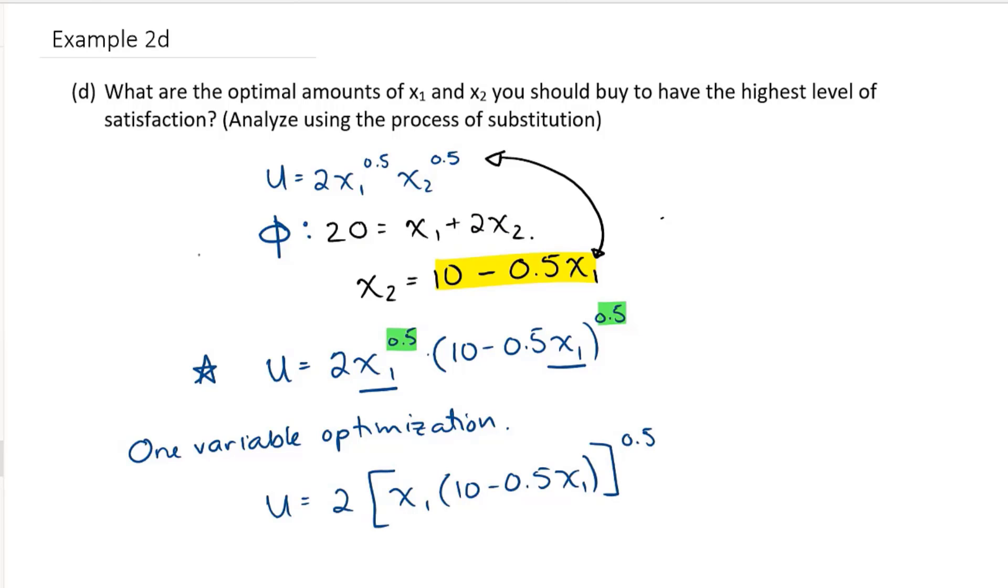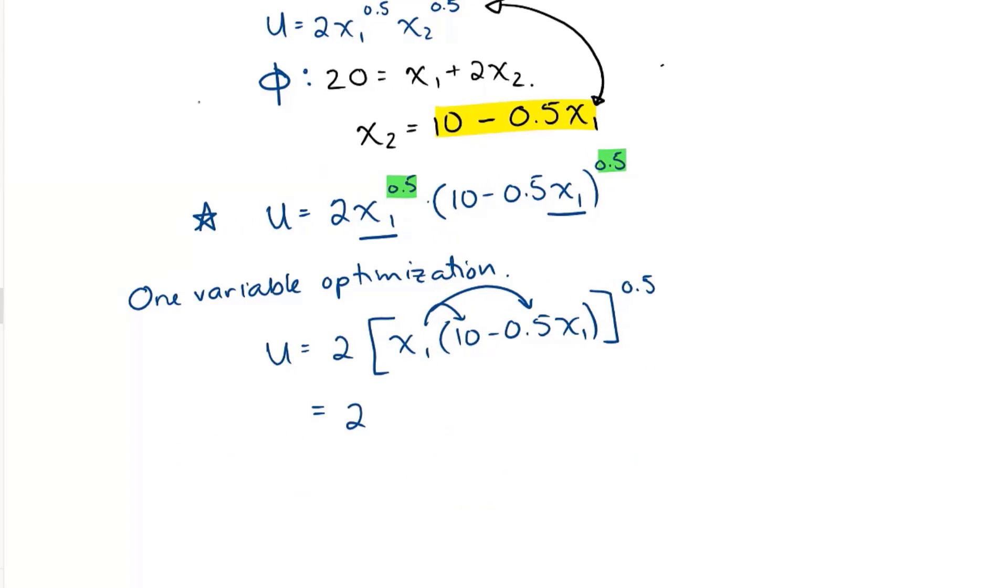So now I can multiply into this bracket. So I have 2 times 10 X1 minus 0.5 X1 squared, all to the power of 0.5. Now I'm going to do my one variable optimization. I'm going to take the derivative with respect to X1. It's not partials, it's the actual derivative with respect to X1.